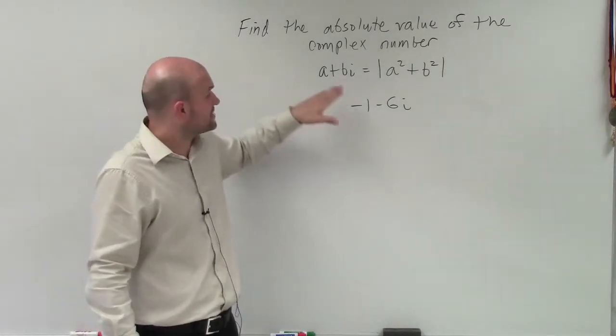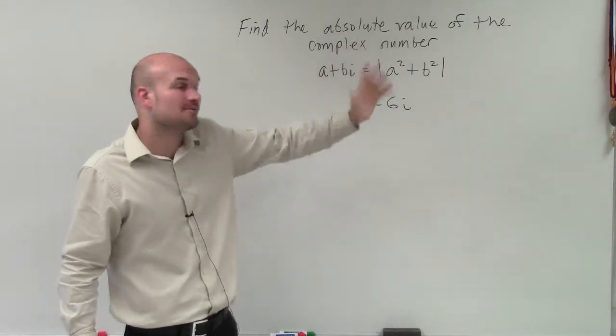So the form of absolute value of a complex number a plus bi equals the square root of a squared plus b squared.